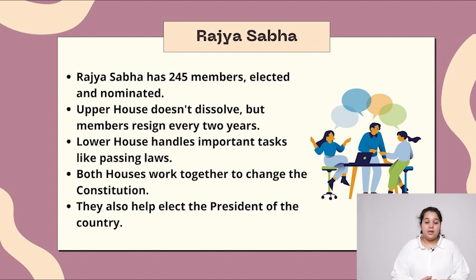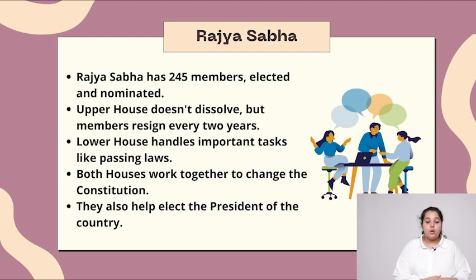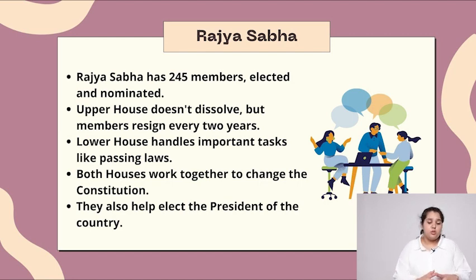Rajya Sabha has 245 members, elected and nominated. The upper house doesn't dissolve, but members resign every two years. The lower house handles important tasks like passing laws. Both houses work together to change the constitution and help elect the president of the country.